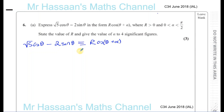Basically what we've got to do is expand this — but not by saying cosine theta plus cosine alpha, because cosine by itself means nothing. So you have to use what they call the compound angle formula, or the addition formula.